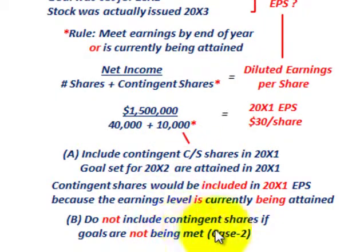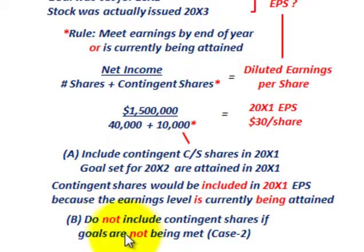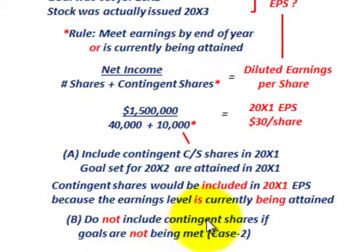In Case 2, the goals were not met. Where the income goals set for Corporation B are not being met, Corporation A would not include any contingent shares in the earnings per share calculation. Goals not being met means you do not include any of those contingent shares in your earnings per share calculation.